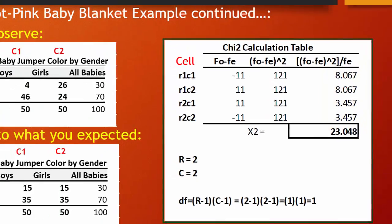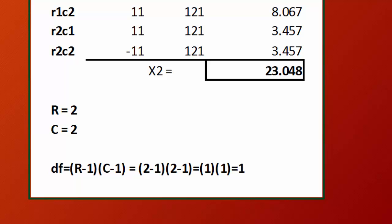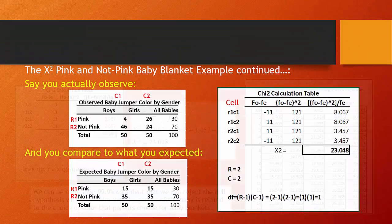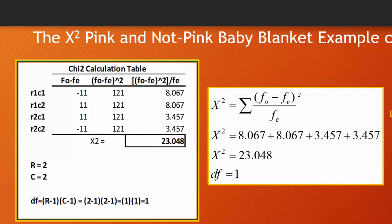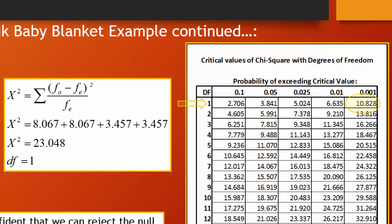The chi-square statistic then needs to consider degrees of freedom. Degrees of freedom = rows minus one times columns minus one. In this case we have a two-by-two table, so (2 − 1) × (2 − 1) = 1. Once you have your chi-square statistic of 23.048 and your degrees of freedom of one, you look it up on a chi-square distribution table.